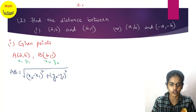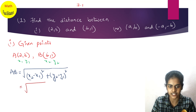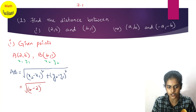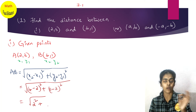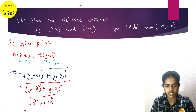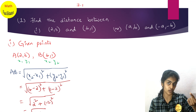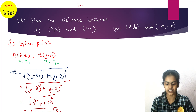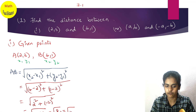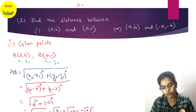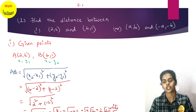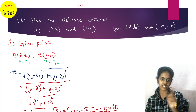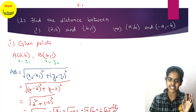Substituting: x2 is 4, x1 is 2, so (4 minus 2) whole square; y2 is 1, y1 is 3, so (1 minus 3) whole square. That equals root of (2 squared plus (minus 2) squared) = root of (4 + 4) = root 8. Writing root 8 as root(4 × 2) = 2 root 2. The distance between these two points is 2√2 units.